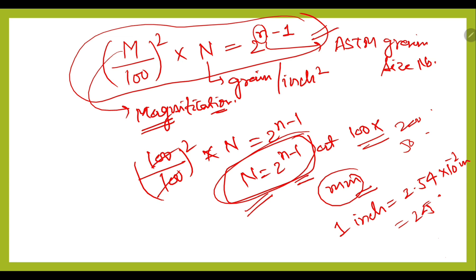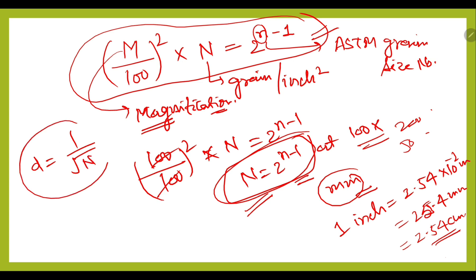That is 25.4 mm, and if it is asked in centimeters then we use 2.54 cm. We can convert using these relations. There is also one more relation between grain diameter and grains per square inch: D = 1/√N. This relation can also be used.